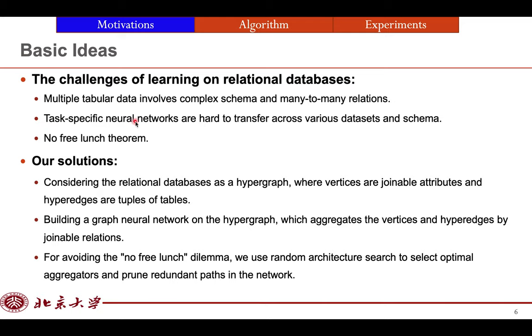So how can we do that? Our basic idea is simple and straightforward. We consider the relational databases as a hypergraph. The vertices are joinable attributes and hyperedges are tuples of tables. Then we build a graph neural network on the heterogeneous hypergraph, which samples and aggregates the vertices and hyperedges on n-hop subgraphs as a receptive field.